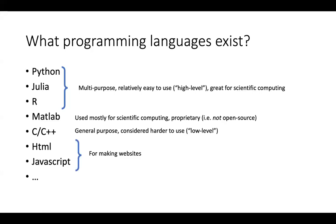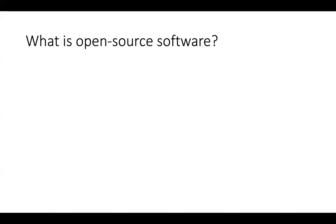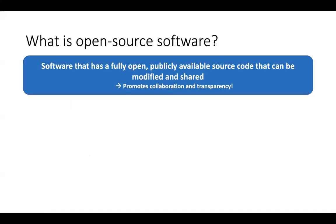What is open source software? It is software with a fully open, publicly available source code that can be modified and shared. Because it can be modified and shared by anyone, there are no secrets — it promotes collaboration and transparency. Everyone can see how the code is written and add their own functions or new features. In science, collaboration and transparency are really important, so open source software is very valuable.